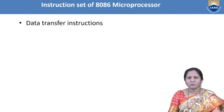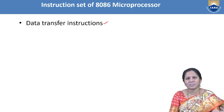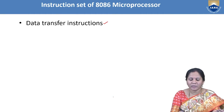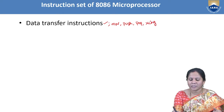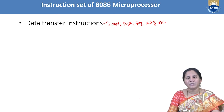Coming to the classification of the instruction set, it is classified into different types. The first is data transfer instructions, which are used to transfer the data from source location to the destination location. Examples include move, push, pop, and exchange. Whatever instructions come under data transfer instructions, when executed, there will be no effect on the flag register.